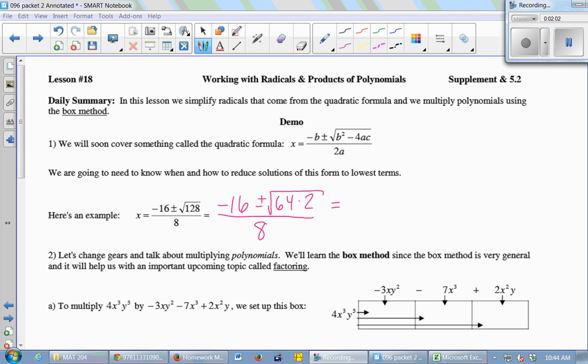When I take the square root, it comes out of the radical, and I write the results. So I have negative 16 still, just copying that, plus or minus. The square root of 64 is 8, and I still have a 2 under the radical. And that's all over 8.